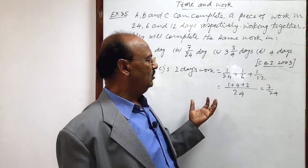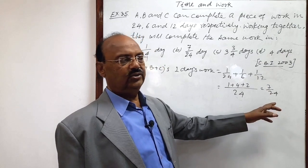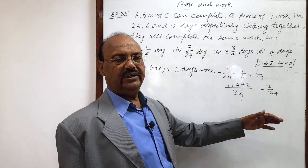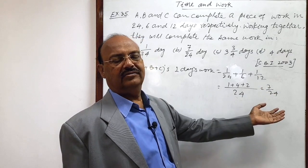If amount of work done in one day is 7 by 24, then number of days required to complete this work will be 24 by 7. Very simple.